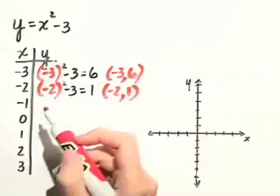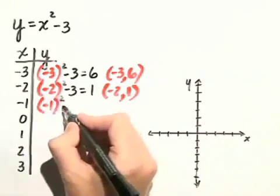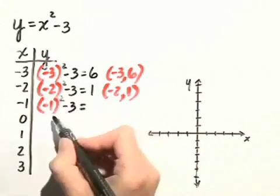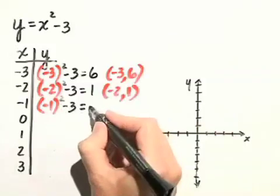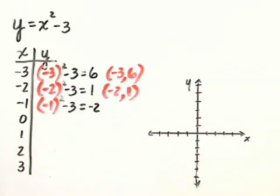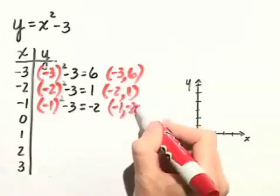Next, we'll substitute negative 1 in for x. Negative 1 squared minus 3 gives us, negative 1 squared is just 1, minus 3 gives us negative 2. So our next point will be represented by negative 1, negative 2.